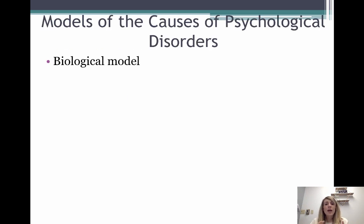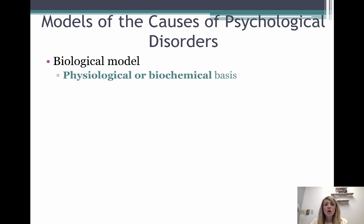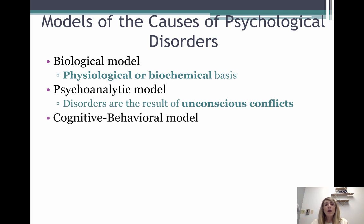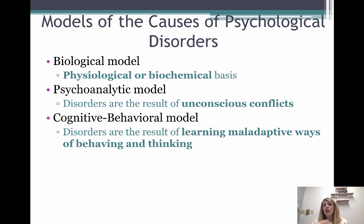The models we use to explain psychological disorders follow our perspectives of psychology. The biological model focuses on physiological and biochemical factors — genetics, brain, neurotransmitters. The psychoanalytic model focuses on the unconscious, saying disorders are the result of unconscious conflicts. The cognitive-behavioral model combines the cognitive and behavioral perspectives, saying disorders result from learning maladaptive ways — through rewards, punishments, or thinking maladaptively, like having false beliefs that can develop into mental illness.